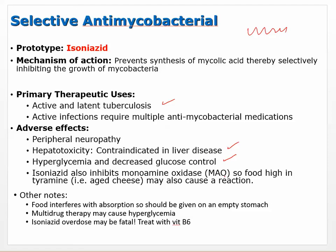Isoniazid also inhibits MAO — monoamine oxidase — which breaks down monoamines like serotonin, norepinephrine, and dopamine, and also tyramine. Tyramine was the big problem we talked about before — things like aged cheese and fish. We can have the same issue with isoniazid because it also inhibits monoamine oxidase. Food interferes with absorption, so it should be given on an empty stomach. Isoniazid overdose may be fatal and should be treated with vitamin B6.